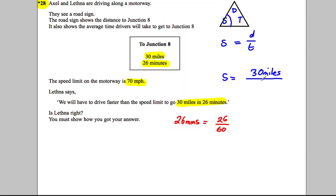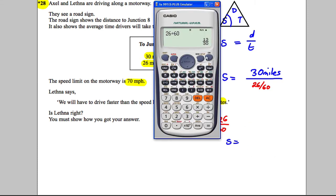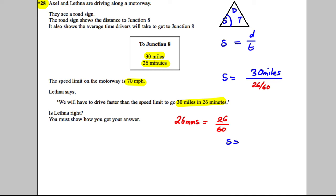So in hours, we have 30 miles divided by 26 over 60. On our calculator, we do 30 divided by (26 over 60), and we get 69.2 miles per hour.